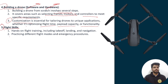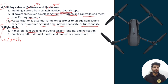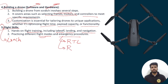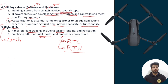Next is customization, which is very important to make the drone unique — optimizing flight time, payload capacity, and functionality. Then comes flight skills, which is critical because without proper flight skills you can crash. We will cover take-off, landing, navigation, and emergency procedures like RTL (Return to Land) and RTH (Return to Home). That was the general overview of this course.